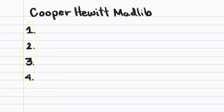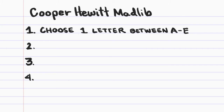To help you define your design challenge, we're going to give you a design madlib. Using your writing tool and paper, write down the numbers one through four like you see on the screen. You'll see a series of prompts next to each number. Respond to the prompts using one word, or in some cases, a letter. Number one: choose a letter between A through E — so write down either A, B, C, D, or E. Choose one.